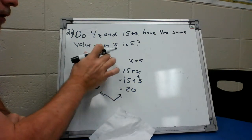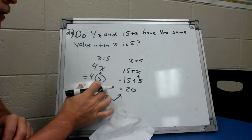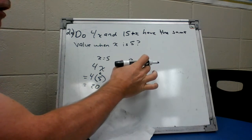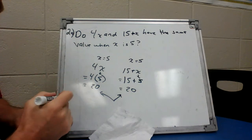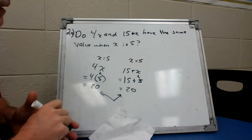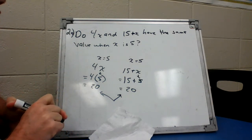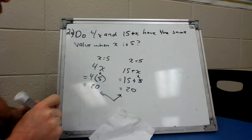So we can easily see that the value of 4x when x is 5 is 20. We see the value of 15 plus x when x is 5 is 20 also. So the question is: Do 4x and 15 plus x have the same value when x is 5? And the answer is yes, they do have the same value.